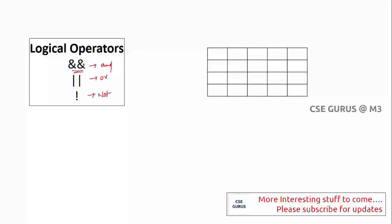AND and OR are binary operators, while NOT is a unary operator. These operators work on values which are either true or false. Based on this, we get four possibilities: both true, one true one false, one false one true, and both false.